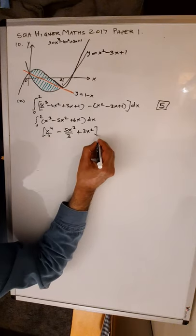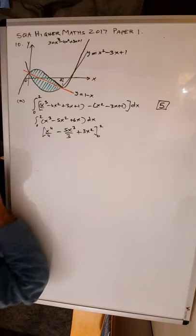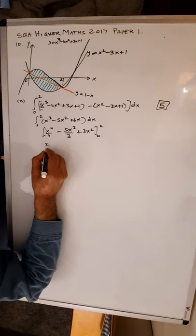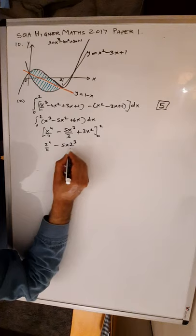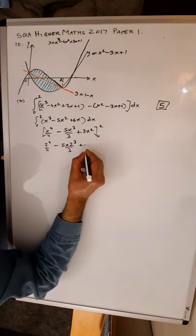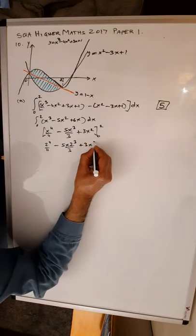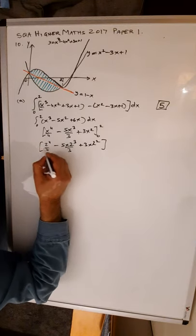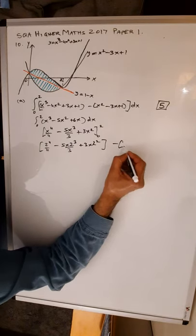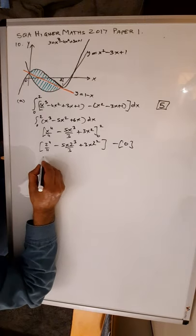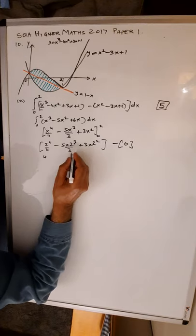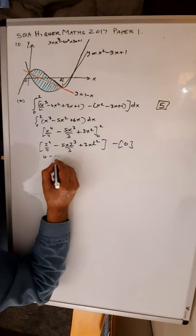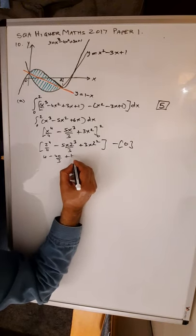Evaluate from 0 to 2. Putting 2 in gives 2 to the 4 over 4, minus 5 times 2 cubed over 3, plus 3 times 2 squared. Putting 0 in gives 0. So this is 16 over 4, which is 4; 5 times 8 is 40, giving minus 40 over 3; and 3 times 4 is 12.